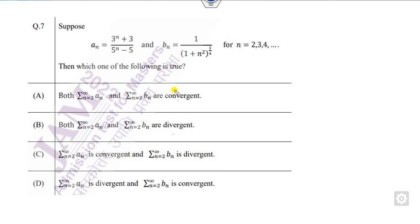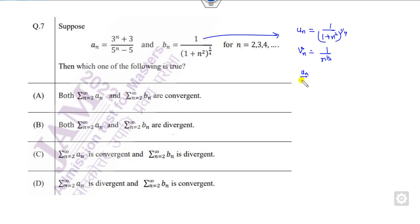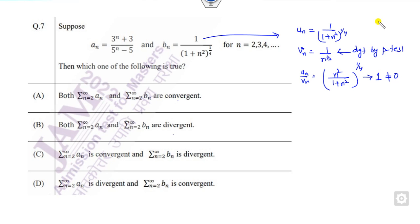Look at the next question: which of the following series is convergent or not? If you look at this question, I consider 1 plus n squared to the power 1/4. If I consider v_n as 1 by this, then u_n upon v_n will go to 1, which is non-zero. But this series is divergent by the p-test — when p is less than or equal to 1, the series 1/n^p is divergent, otherwise convergent. So this series is divergent, meaning two options are cancelled.